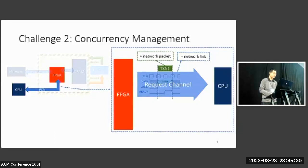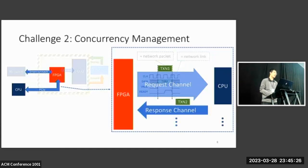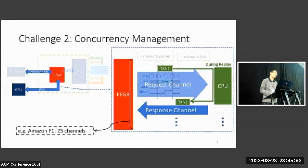But that brings us to the second challenge, concurrency management. This is because there are usually multiple channels sending transactions concurrently, and the ordering of those transactions are crucial for application correctness. For example, during replay, the response transaction is required to be replayed after the request transaction is sent. Otherwise, invalid ordering often leads to deadlocks, incorrect results, or other undefined behaviors. So in a real-world setup such as Amazon F1, there are 25 channels, which makes it challenging to manage which transactions should be ordered and which can happen in parallel.